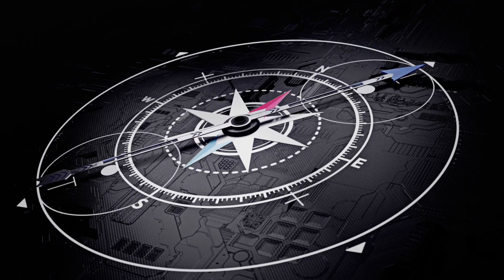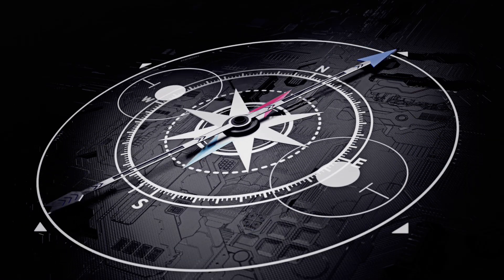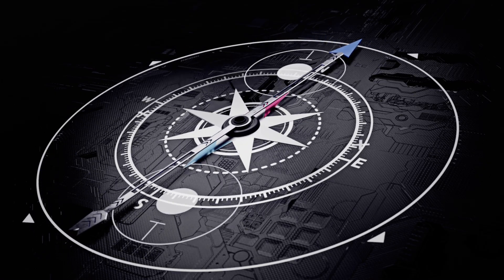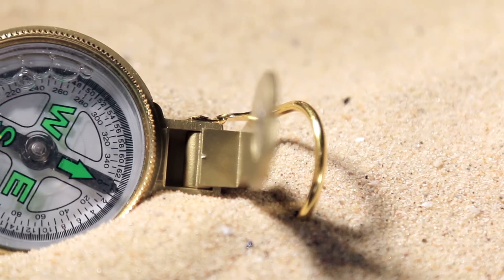When you hold a compass, the magnetic needle aligns itself with Earth's magnetic field, and voila, it points roughly toward the magnetic north. That's your guide.